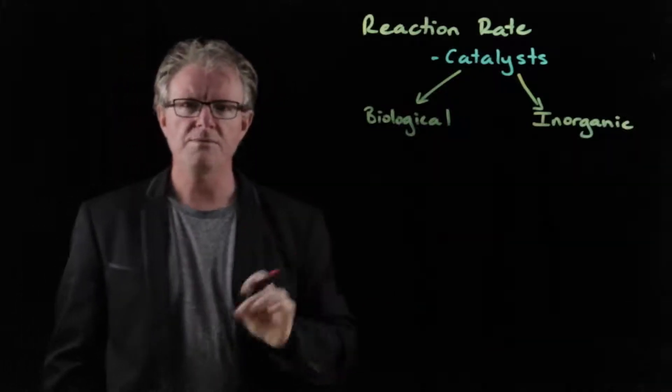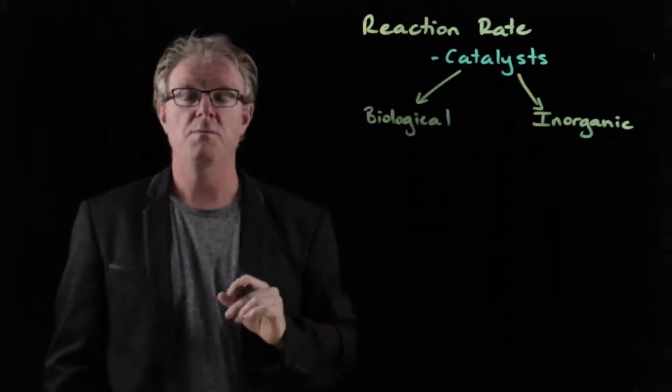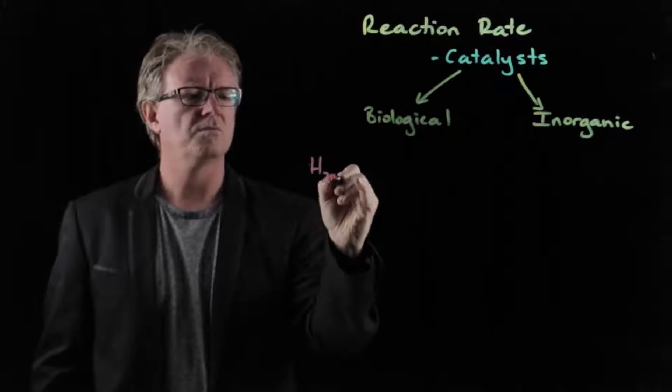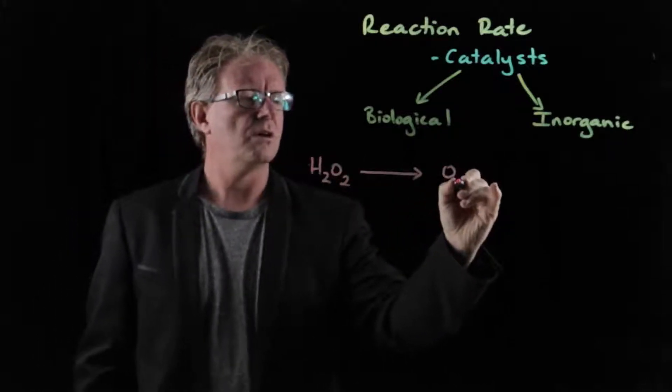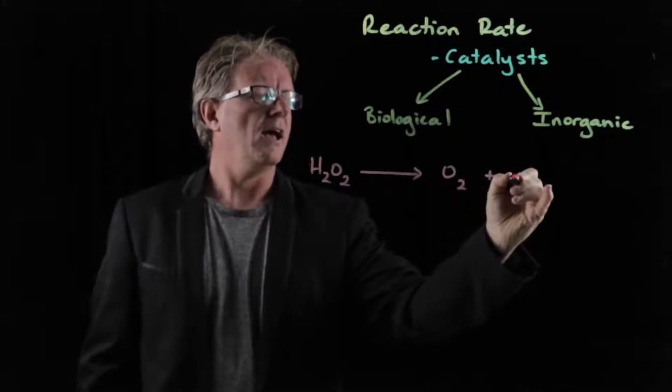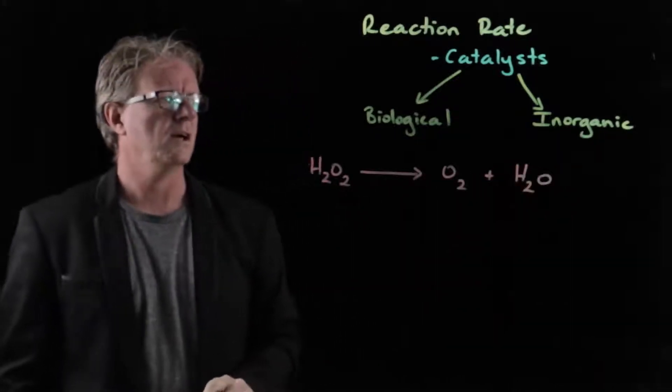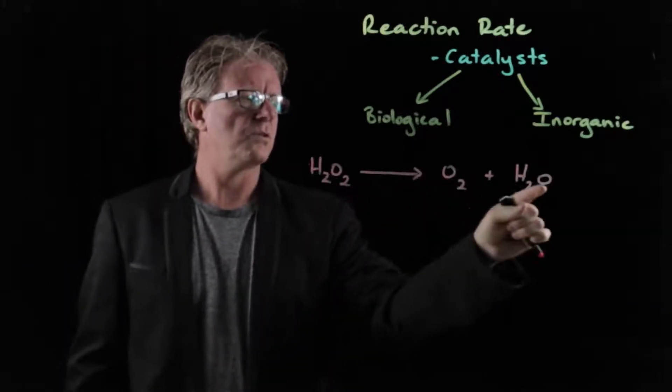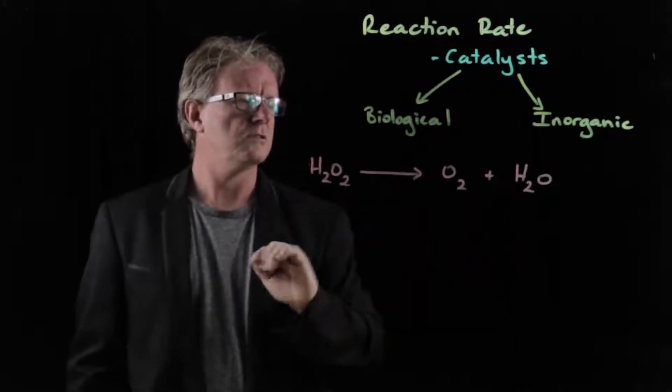We touched upon them briefly before, but we're going to look at them in a little bit more detail. A reaction that you're probably familiar with is this reaction here, where we get hydrogen peroxide and we break that down into oxygen and water. So if we were to balance this here, we've got two, three oxygens, we've only got two there, and we've got two hydrogens.